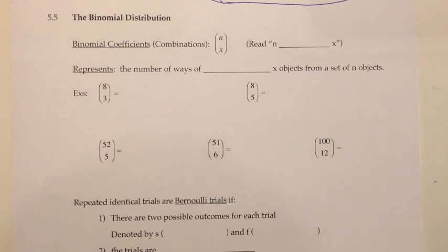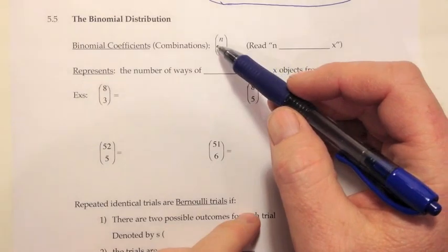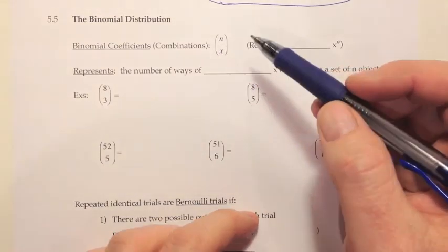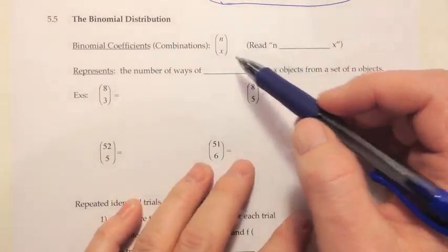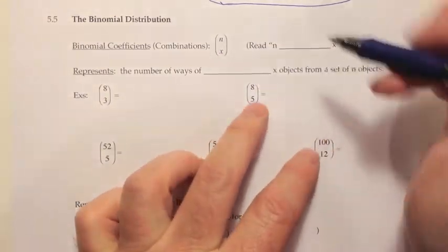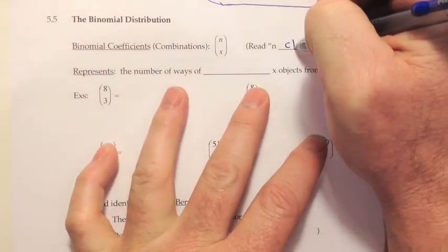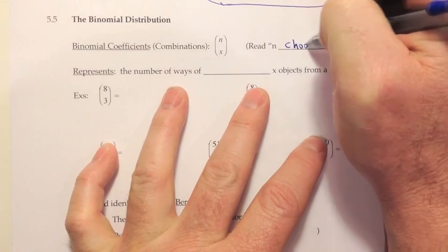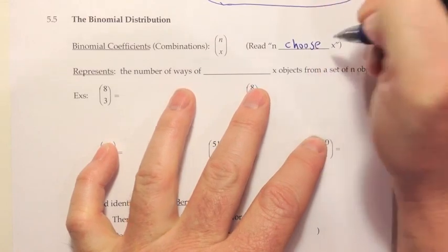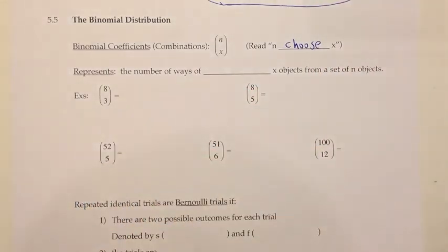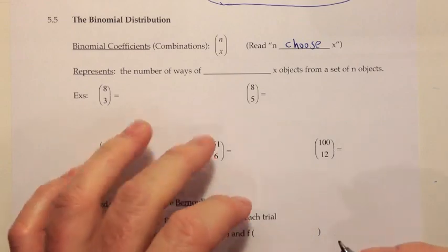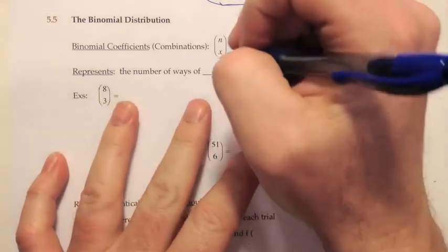To write them out it looks like a fraction where we forgot the fraction bar, but it's not n over x. We would read this as 'n choose x' and it represents the number of ways of choosing x objects from a set of n objects.